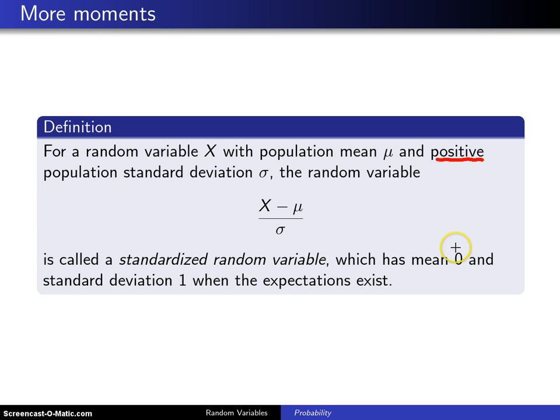It may not be immediately clear why the mean of this random variable is 0 and its standard deviation is 1, so let me go ahead and do quick proofs of those two results.